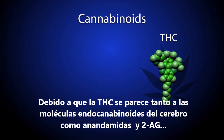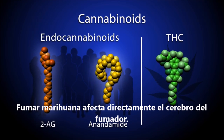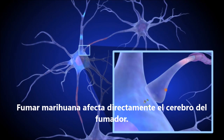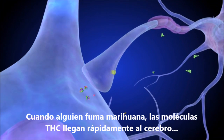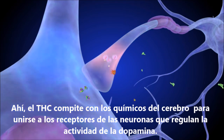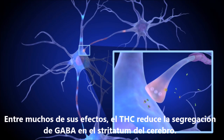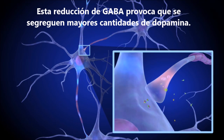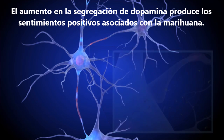Because THC is so similar to the brain's own endocannabinoids, such as anandamide or 2-AG, smoking marijuana directly affects the brain of the user. When someone smokes marijuana, THC molecules quickly reach the brain. There, THC competes with the brain's endocannabinoids to bind with cannabinoid receptors on neurons that regulate dopamine activity. Among other effects, THC reduces the release of GABA in the striatum. This reduction, in turn, causes nearby dopamine neurons to release more dopamine. Increased dopamine release produces the positive feelings of the marijuana high.